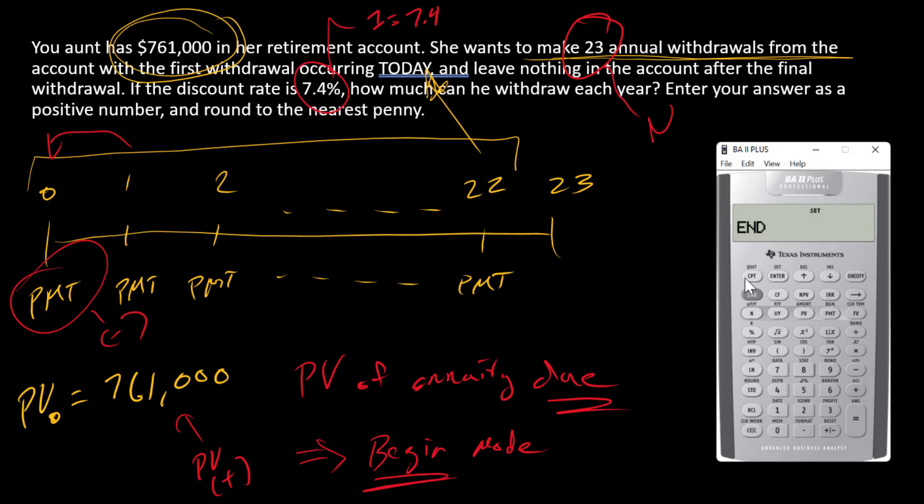This tells me I'm in end mode right now. When I see this set up here, my calculator is just asking me to push set to change it. So here's the set, the second function with the enter key. So I'm going to say second set. And now that I have BGN up there in the right top right corner, I know I'm in begin mode.